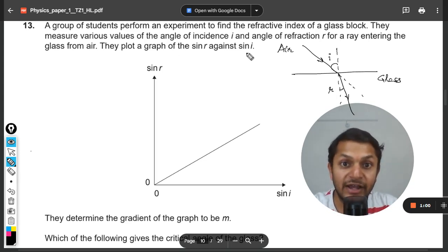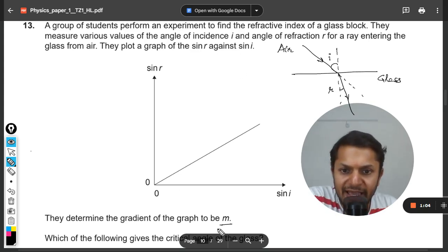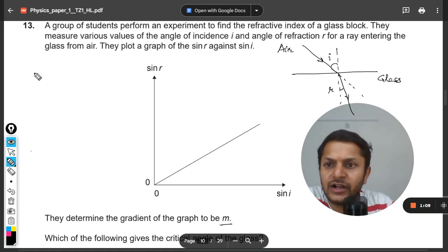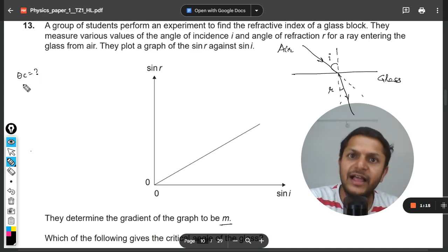They plot the graph of sine r and sine i. They determine the gradient of the graph to be m. Which of the following gives the critical angle of the glass? So we are basically interested in the critical angle.